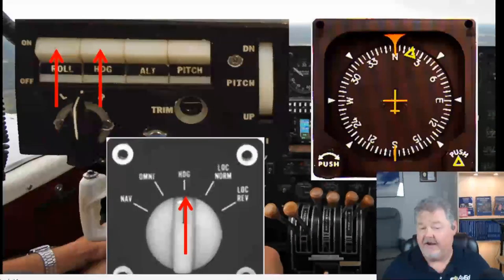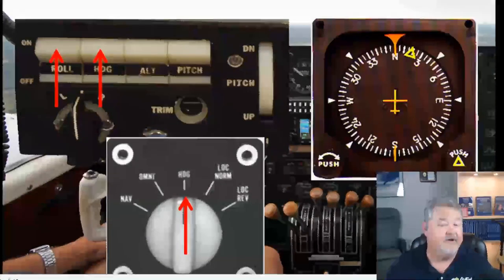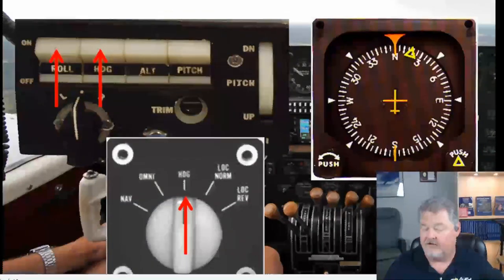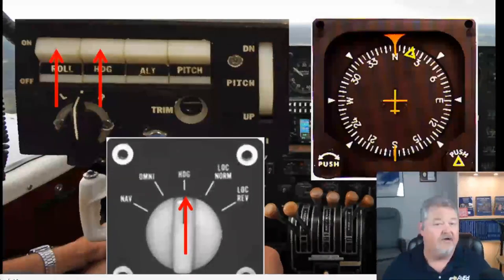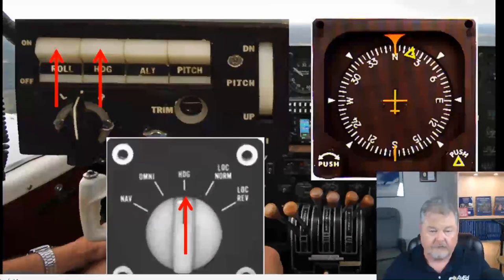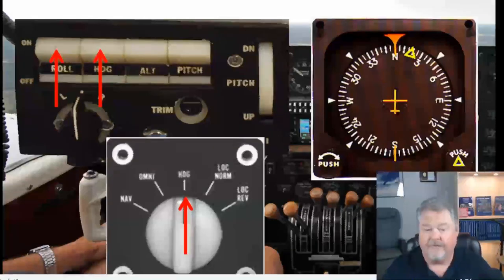We're going to test the heading mode first. We need our directional gyro spooled up. On the directional gyro, there's a small triangle — the lever line is the red diamond above it, the fixed line that points over the heading. In this case the aircraft is pointing north. To move the heading bug, you push that knob, turn it and rotate it, and align it under the lever line. Before you can engage heading mode, it's got to be aligned under the lever line. Once it's there, press the heading mode — if it's lined up, the heading mode will lock and the rocker switch will stay in place. You can then push and rotate the bug left and right against the lever line, and you should see the ailerons move left and right accordingly.